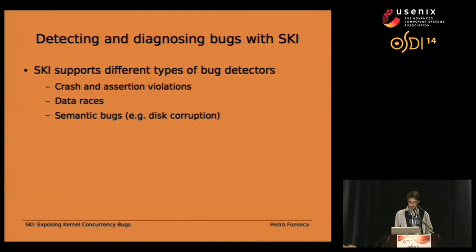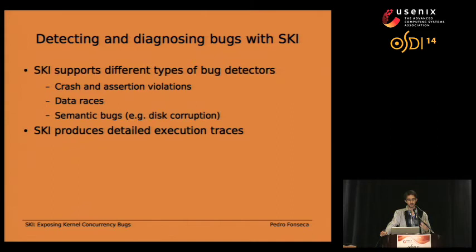Ski also has a very powerful feature: it can produce very detailed execution traces and even memory traces, which can be very useful for developers dealing with very hard, complex concurrency bugs.